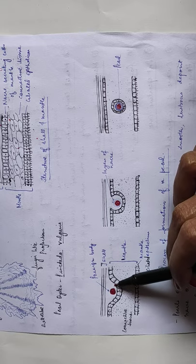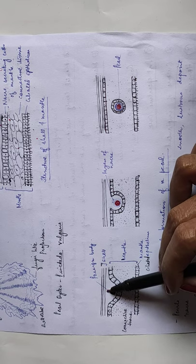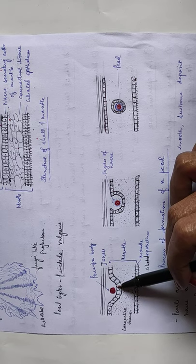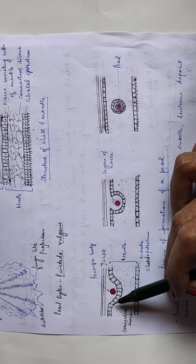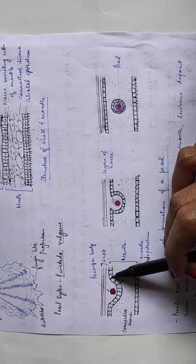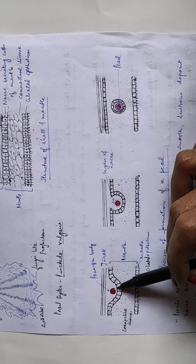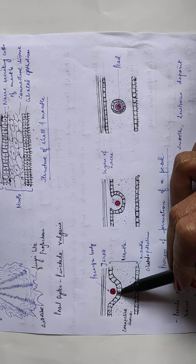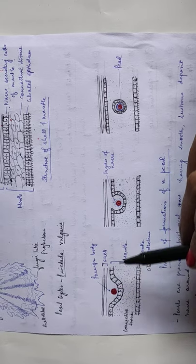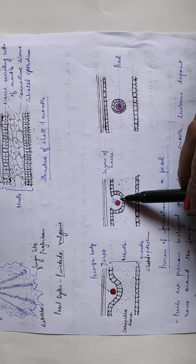Why does it secrete the nacre? Because when any foreign particle enters into the shell, the organism feels kind of irritation. So in order to avoid these irritations, the nacre-secreting cells secrete the layers of nacre around this foreign particle.